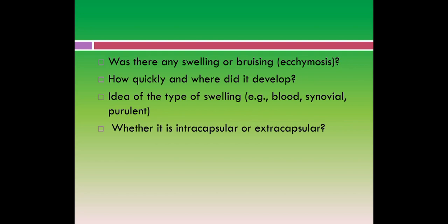We should ask whether there was any swelling or bruising (ecchymosis) — how quickly and where did it develop? We need to ask about the size of the swelling and how many hours it took to evolve, as this gives an idea of the type of swelling — whether it is blood swelling, synovial swelling, or purulent swelling. Whether the swelling appeared immediately or later tells us whether it is intracapsular or extracapsular swelling.